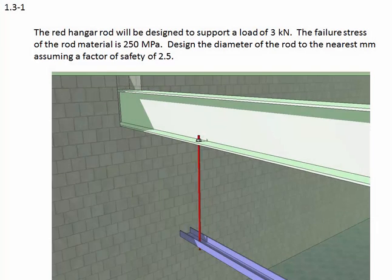Example problem 1.3-1. The problem states the red hanger rod will be designed to support a load of 3 kN. The failure stress of the rod material is 250 megapascals. Design the diameter of the rod to the nearest millimeter, assuming a factor of safety of 2.5.